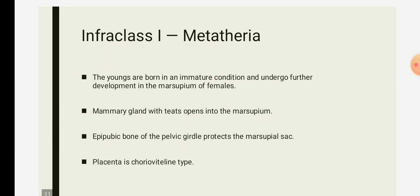In today's lecture we are going to see infraclass one, Metatheria, and its classification. 'Meta' means between or after. These are the marsupials which will have a brood pouch present in the female. Mammary glands will bear nipples, and epipubic — that is marsupial — bones are usually present and attached with the pubes.